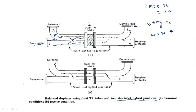During reception, the antenna collects the signal and it travels forward without reflecting back. Since the received signal is very weak, the TR tubes are not fired — they simply act as open circuits. That signal is then collected by the receiver. This is how the transmitting and receiving signals are separated in the balanced type duplexer.